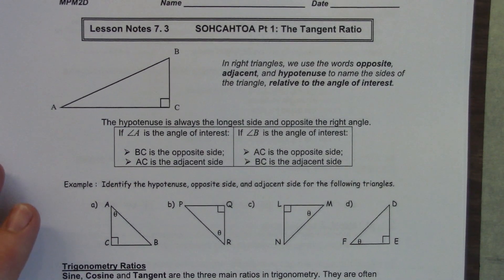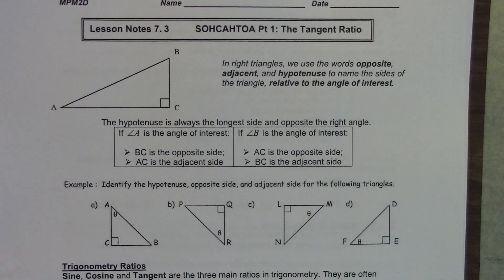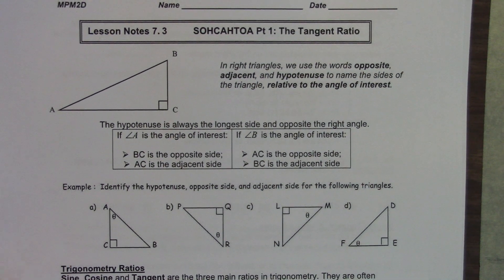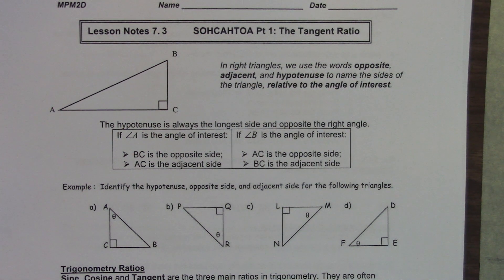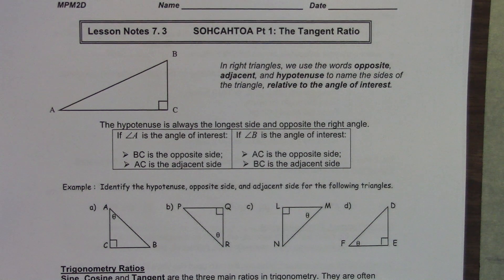This is 7.3, SOH-CAH-TOA, the tangent ratio. This is something that will hopefully be ingrained in your brain for the next couple of years with math - you're going to hear this a lot. Who's heard of that expression SOH-CAH-TOA before?